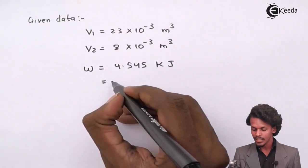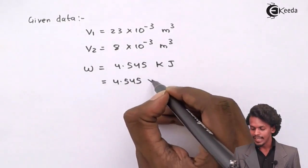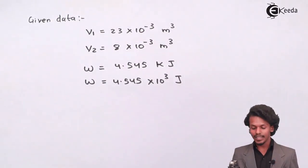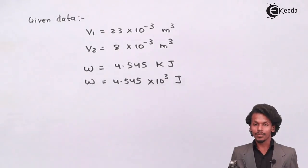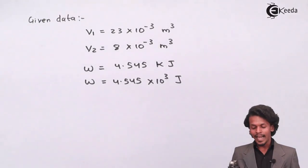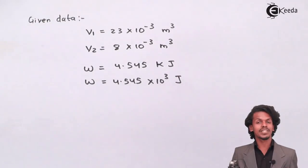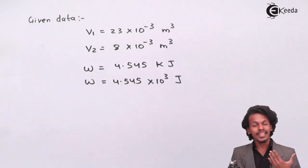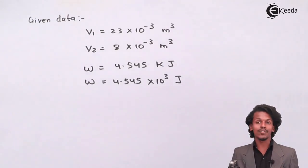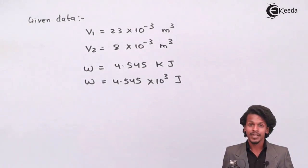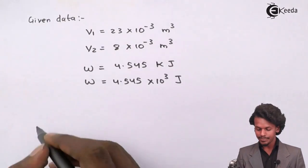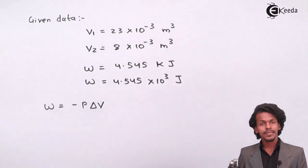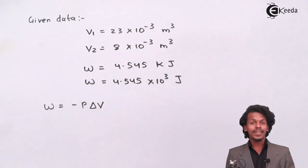We can convert the work into joules: W = 4.545 x 10³ J. Based on the volume change from V1 to V2, we need to calculate the external pressure. The formula for work is: W = -P ΔV.